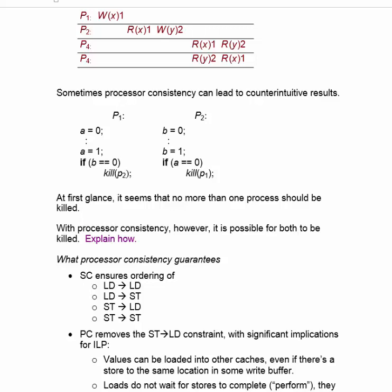Sometimes processor consistency does things that you wouldn't expect. We have here a sequence of actions by P1 and P2. P1 sets A equal to 0 and then later sets A equal to 1. P2 sets B equal to 0 and later sets it to 1. Each of the two processes tests the variable set by the other process, and if that variable is 0, it kills the other process. At first glance, it seems that no more than one process should be killed. If P1 executes entirely before P2, P1 sets A equal to 1, and then when it reaches the statement 'if B equals 0', B is still 0, so P2 is going to be killed.